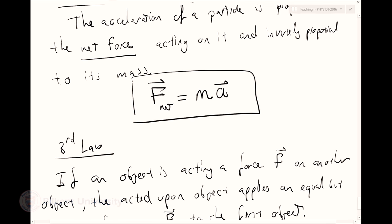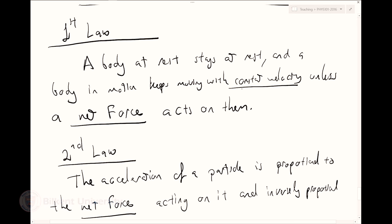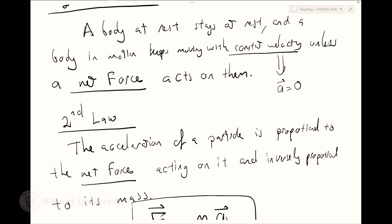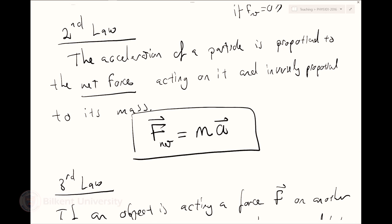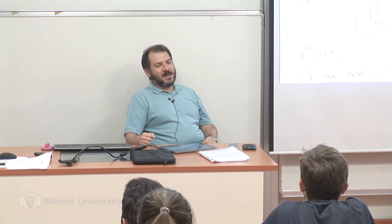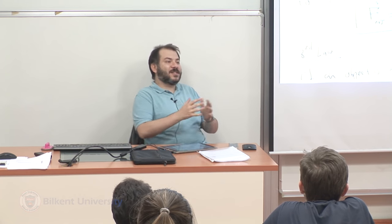The first law tells me that constant velocity means zero acceleration. If F_net is zero, then acceleration is zero. It's exactly a special case of the second law. So why did Newton state it as his first law separately, rather than just saying F = ma and leaving the rest? Maybe it's a philosophical or political statement.